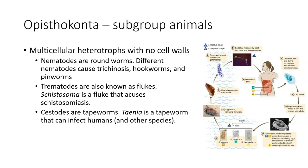Nematodes — phylum Nematoda — are round worms that are not segmented and don't have a true body cavity; they have what's known as a pseudocoelom. They can be microscopic, like a pinworm, where you need a microscope to see it, or they can be quite long. Hookworms and Ascaris can be over a foot long, so you would not need a microscope to see those.